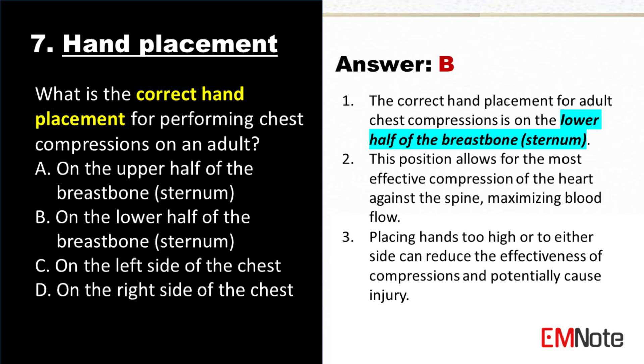The correct hand placement for adult chest compressions is on the lower half of the breastbone or sternum. This position allows for the most effective compression of the heart against the spine, maximizing blood flow. Placing hands too high or to either side can reduce the effectiveness of compressions and potentially cause injury.